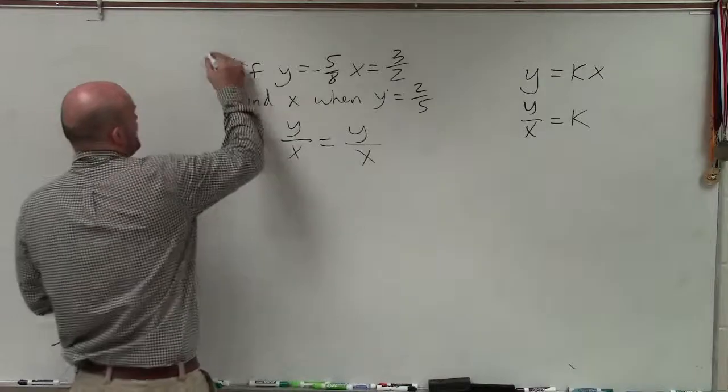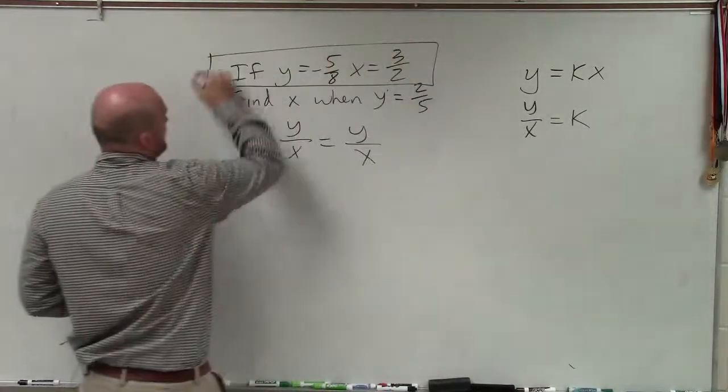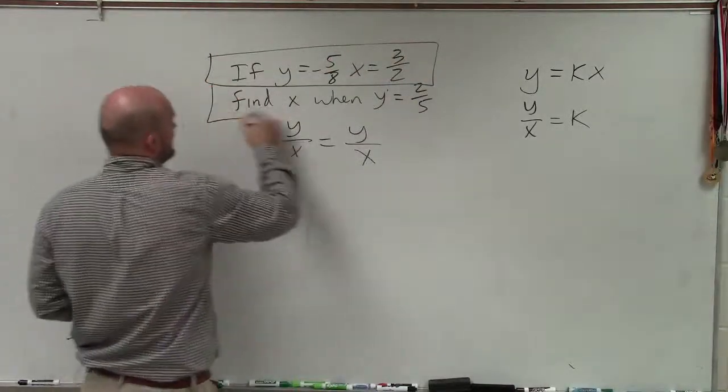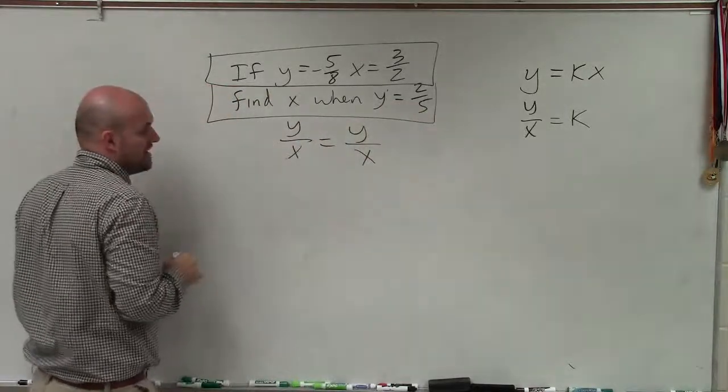Now, notice that we kind of have two direct variations. Here, when y is equal to a value and x is equal to a value. And here, where we know the value of y, but we don't know the value of x.